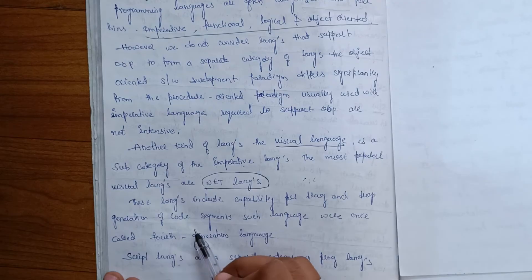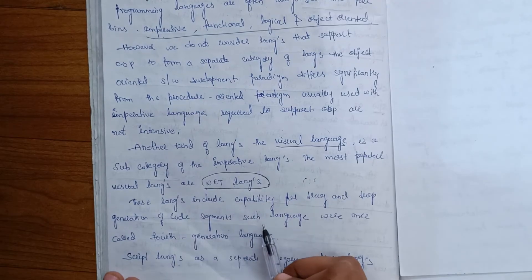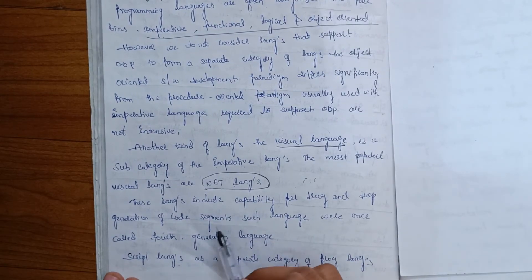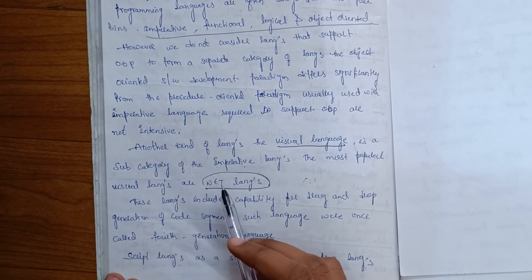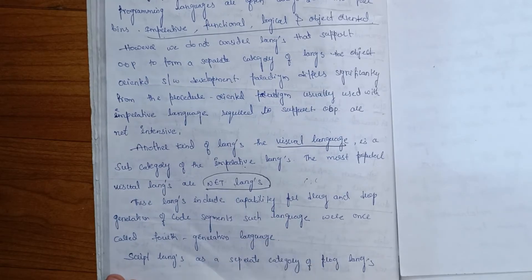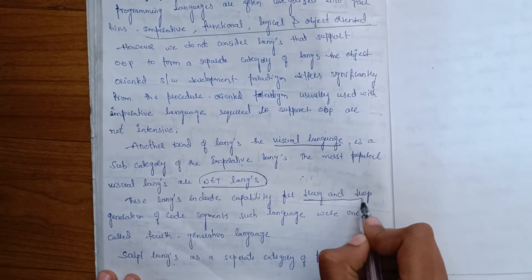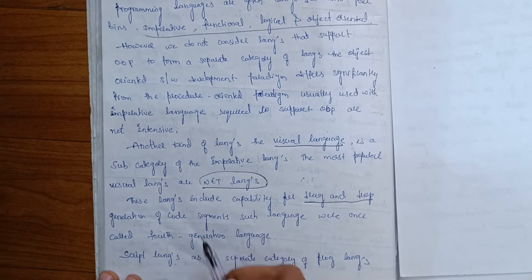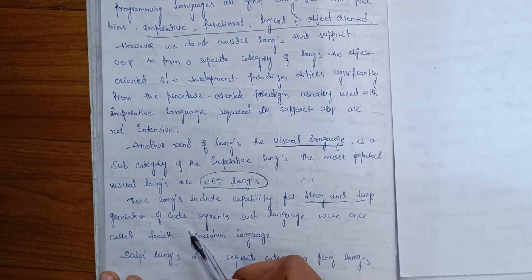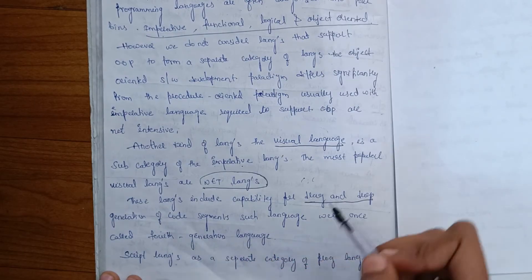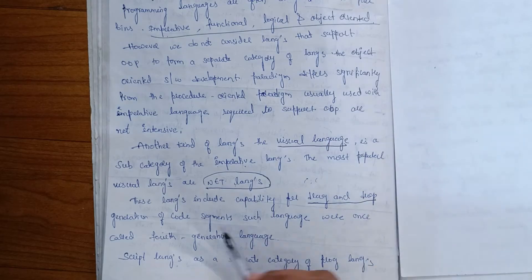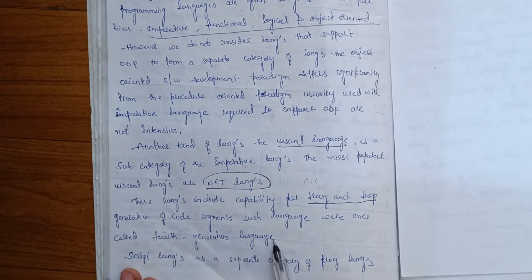This language includes capability for drag-and-drop generation of code segments. Such languages were once called fourth generation languages. When we use drag-and-drop to generate code segments, these are called 4th generation languages.